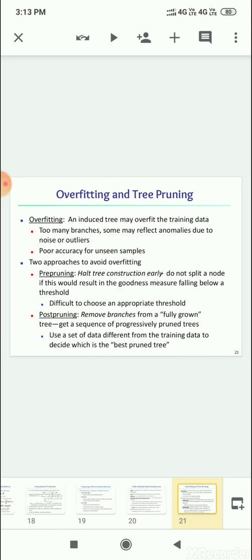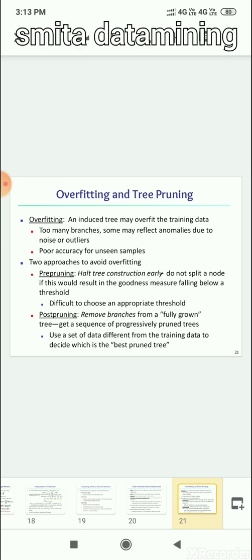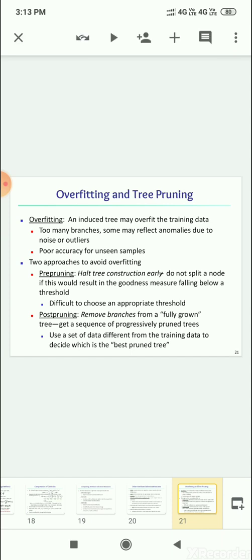In this video I am also telling about overfitting and tree pruning. What is overfitting? An induced tree may overfit the training data. Too many branches may sometimes reflect anomalies due to noise or outliers, so there will be poor accuracy for unseen samples. Two approaches are there to avoid overfitting: pre-pruning and post-pruning. Pre-pruning means we halt tree construction early. Do not split a node if this would result in the goodness measure falling below a threshold.